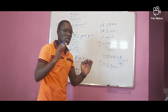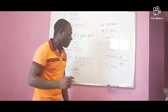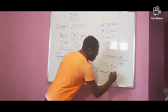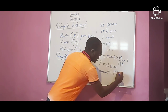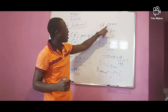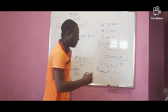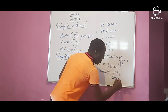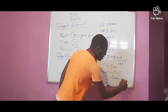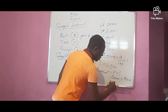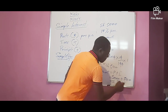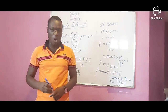So how much will you pay in total — the whole amount? Amount equals principal plus interest, which equals 5,000 plus 500. So he'll pay a total of 5,500 shillings at the end of one month.